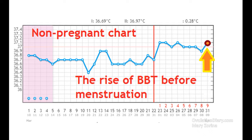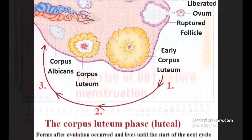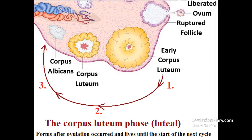High BBT is a characteristic of the second phase of the cycle — the phase of the corpus luteum, the yellow hormone-secreting body. It produces progesterone in large quantities, which inhibits estrogen and increases BBT. Progesterone is responsible for preparing the uterine endometrium for possible implantation, promotes saturation of uterine tissue and breasts with nutrients, and prepares the female body for pregnancy and the carrying of a pregnancy.